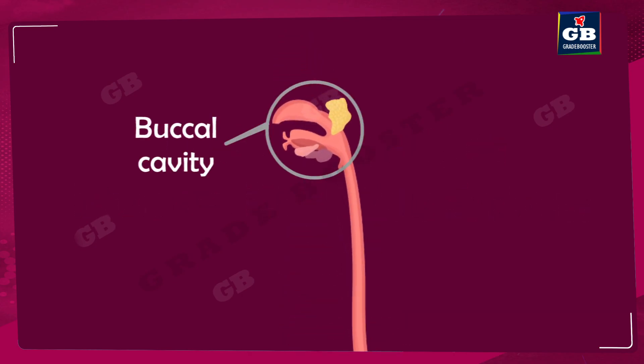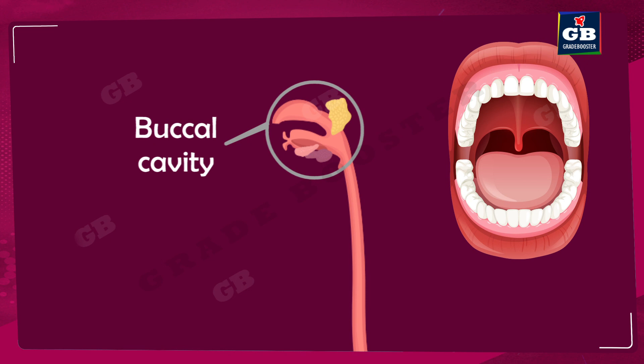The first part of the digestive system is the mouth. But what is the buccal cavity? The cavity inside our mouth is called the buccal cavity. This is the first part of our digestive tract.